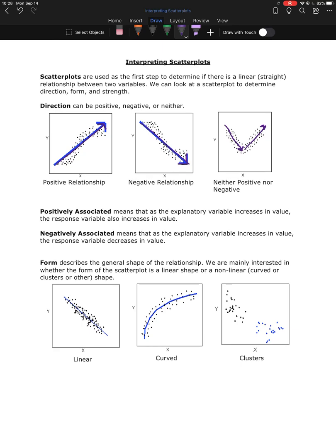Then form describes the general shape of the relationship. We are mostly interested in whether it's linear or nonlinear, if it has any sort of curve or anything like that, because the only thing we're going to be looking at is relationships that are linear. If they're not linear, there are ways to deal with those types of relationships, but they're not going to be within the scope of this course.